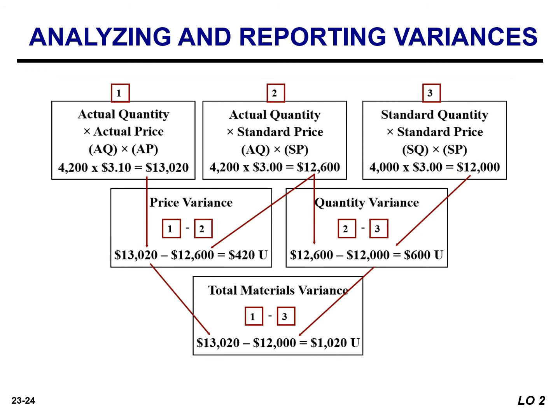Companies sometimes use a matrix to analyze a variance. When the matrix is used, a company calculates the amounts using the formulas for each cost element first, and then calculates the variance. The matrix provides a convenient structure for determining each variance, though I personally prefer the alternative formulas.